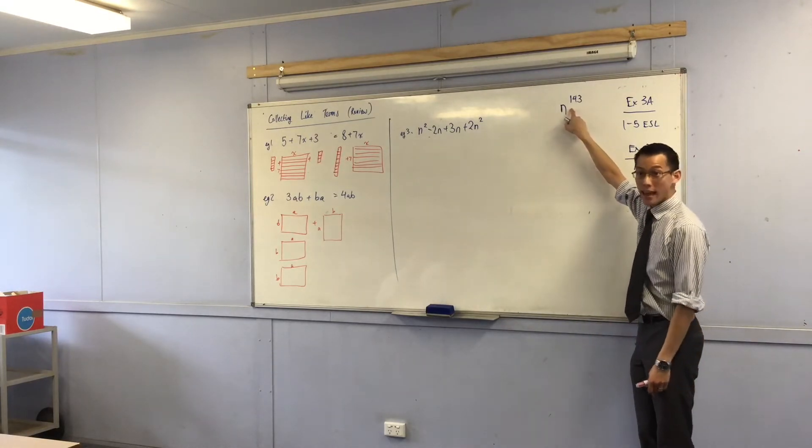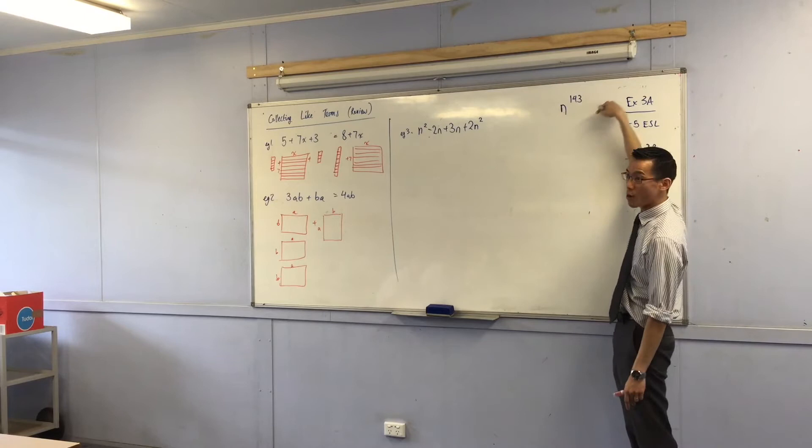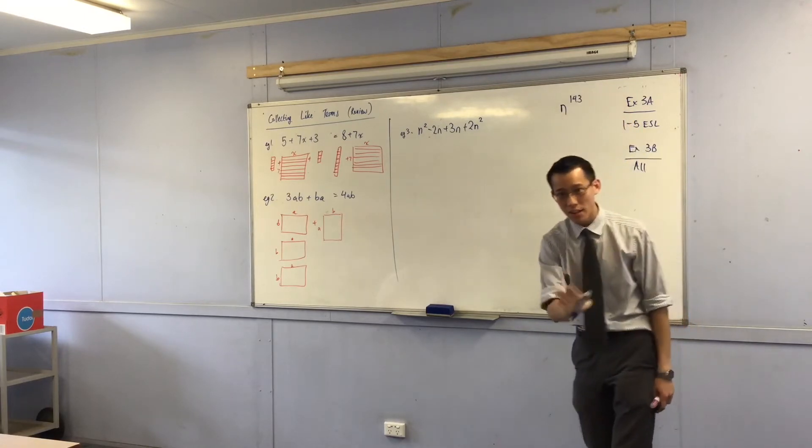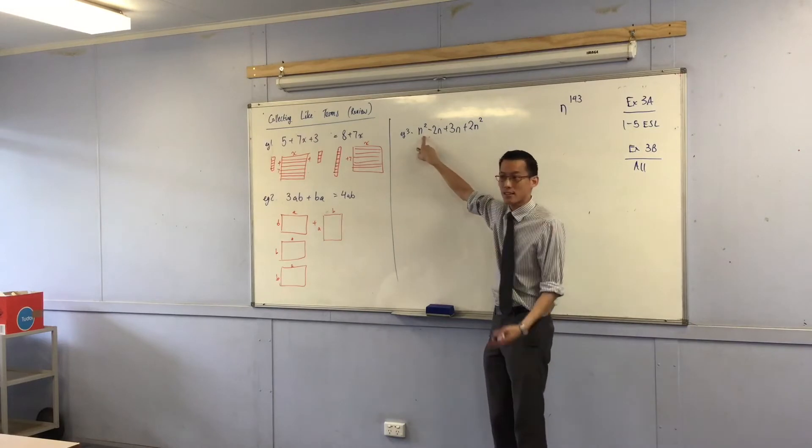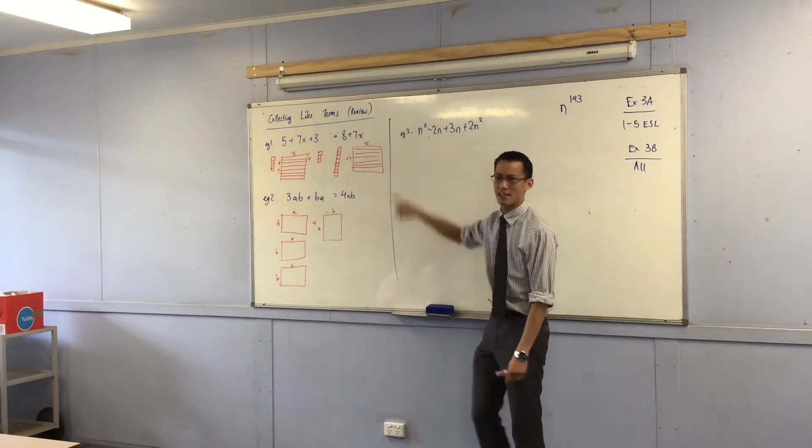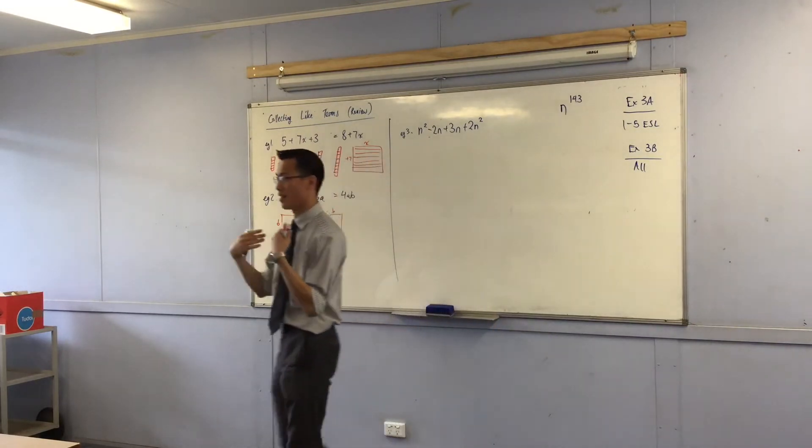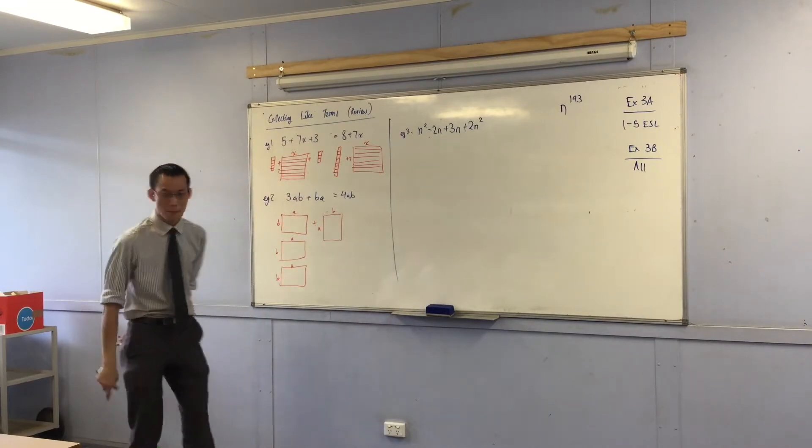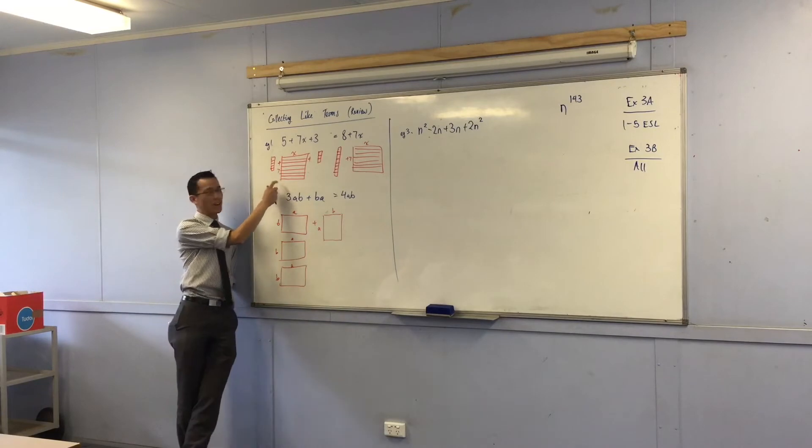You'd say n to the power of and then you just read out whatever number is there. But almost none of you will read this in the same way. You won't read that as n to the power of 2, you'll read that as n squared.